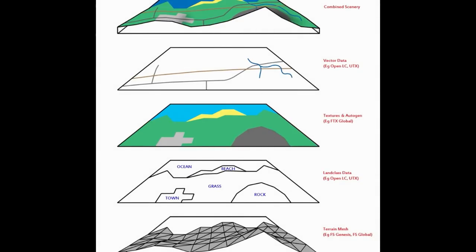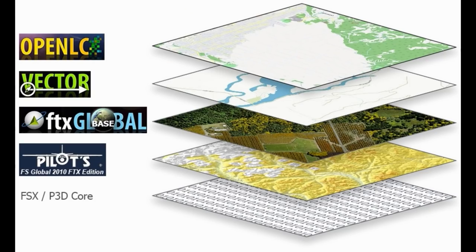On top of that you get your vector data. Your vector data basically tells your simulator where your roads are, where your rivers are, where your bridges will be. It doesn't really contain the files for this — it's more the location information. Your next level is your land class data. This basically says this location is a town, this location is grass, that is where your ocean is, that's where your beach is, and these are rocks. Again, it doesn't contain the textures — it just defines the location in the sim of where everything is.